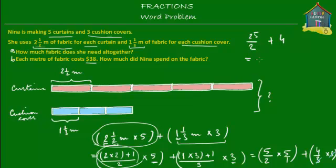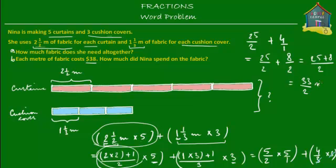So we have 25 upon two plus four. This four means four upon one. To add these two fractions we must find the common denominator, which is two. Converting four upon one gives us eight upon two. So we add 25 to eight and put everything upon the same denominator two: 25 plus eight is 33 upon two. And all these were in units of meters — the units are very important, you must always write the units.